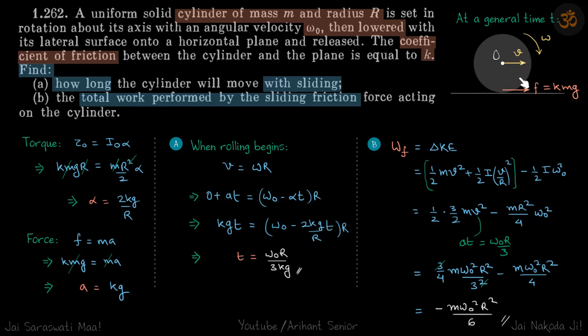Initially there is no rolling, so we are going to write separately F equals ma and torque equals I alpha for the cylinder. Because there is no rolling, we cannot say that a is equal to alpha r.